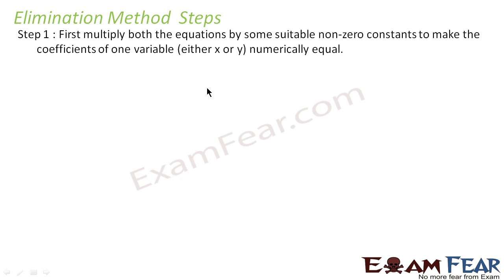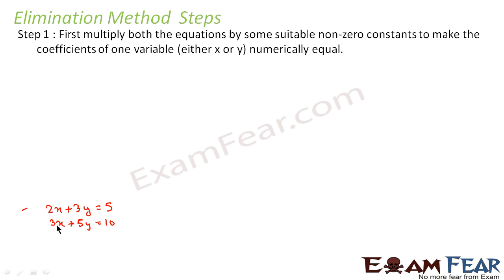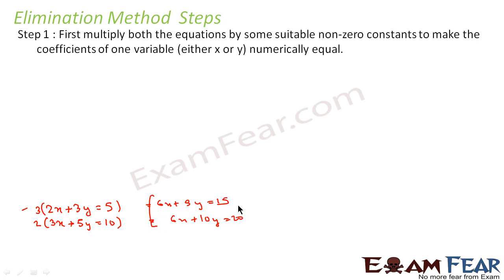For example, suppose we have 2x plus 3y is equal to 5 as one equation, and another equation is 3x plus y is equal to 10. We will multiply both equations by a suitable non-zero constant to make the coefficient of either x or y equal. If we multiply the first by 3, we get 6x. If we multiply the second by 2, we also get 6x. So we get 6x plus 9y equals 15 and 6x plus 10y equals 20.